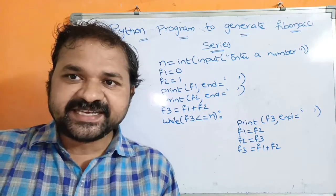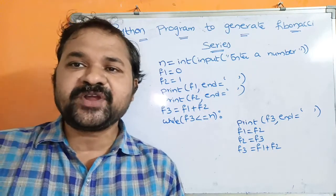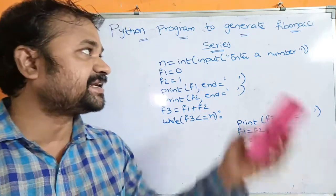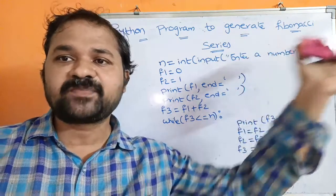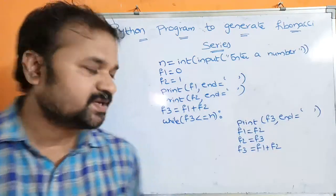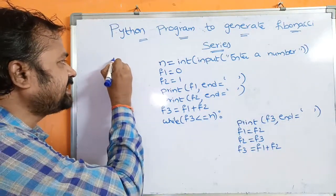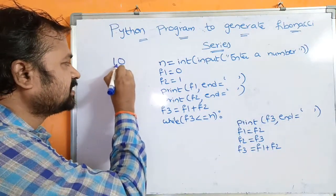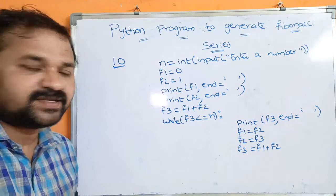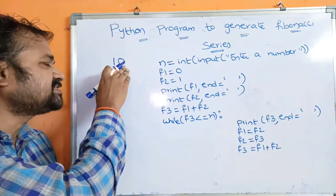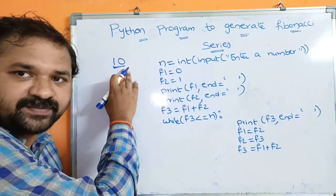Now let us see this Python program to generate the Fibonacci series up to N. So let the number be 10, then we have to print the Fibonacci series up to 10.